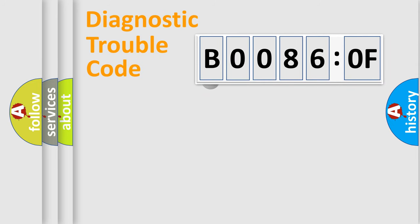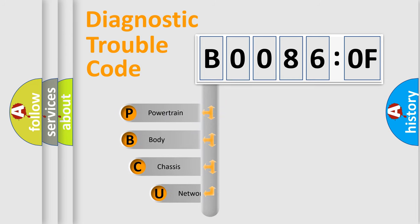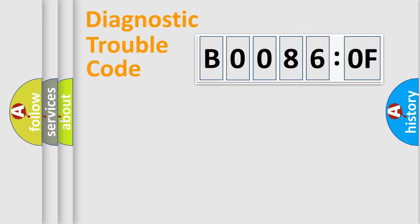First, let's look at the history of diagnostic fault code composition according to the OBD2 protocol, which is unified for all automakers since 2000. We divide the electric system of automobile into four basic units: Powertrain, Body, Chassis, and Network.